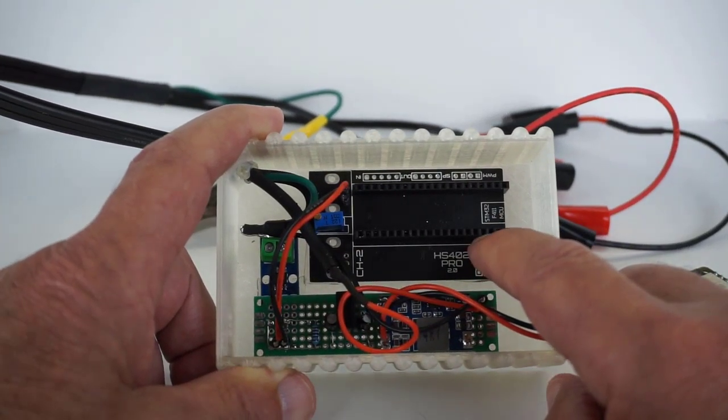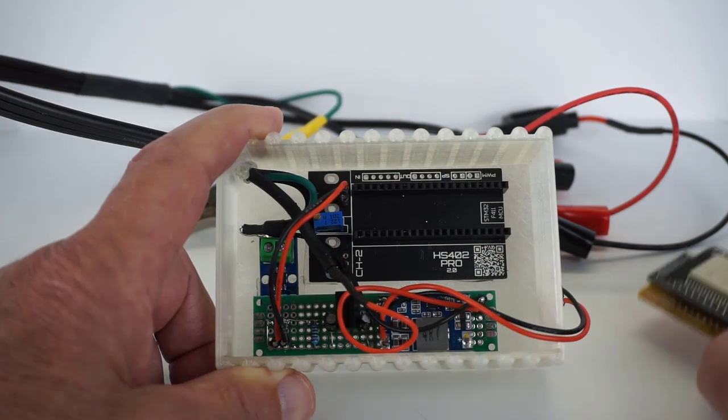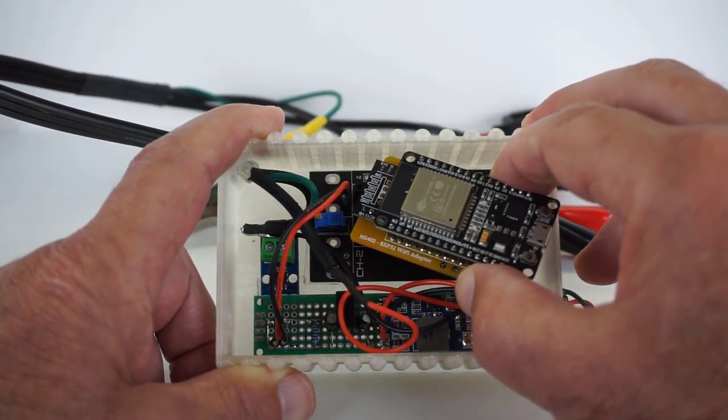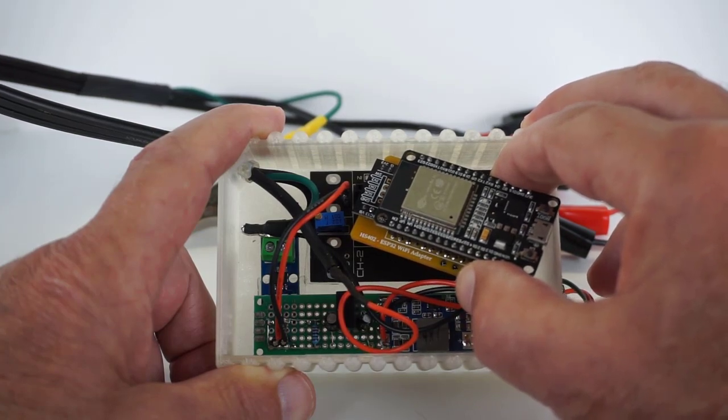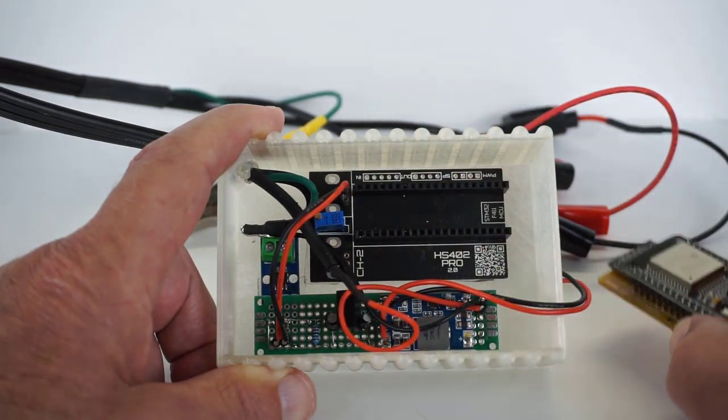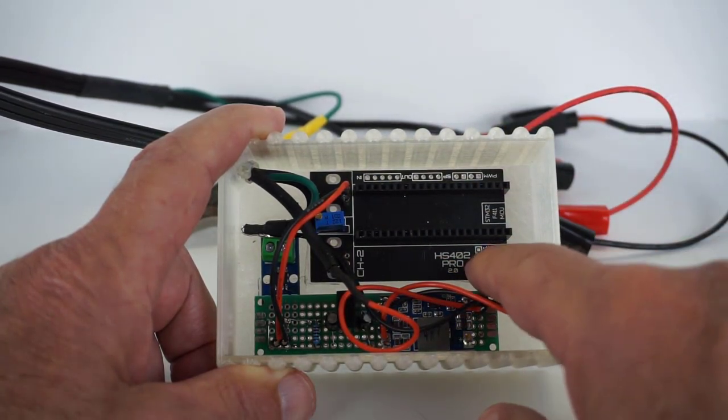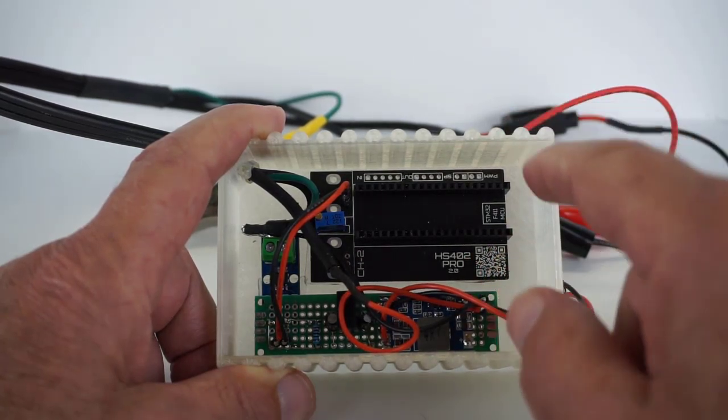This project is based on an HS402 Pro oscilloscope circuit. I've used the PCB 2.0 here and I've provided Wi-Fi through this 30 pin ESP32 W room development board.